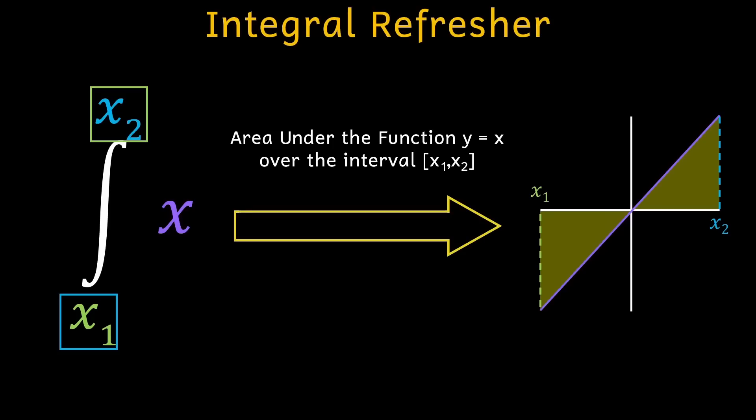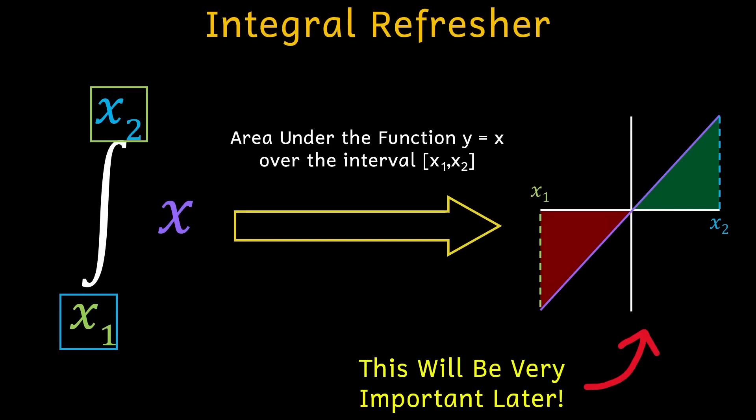One important thing to note though is that area above the x-axis is considered positive, while area below the x-axis is considered negative. This concept will be very important for reducing the amount of work it takes to solve for the Wi-Fi password later.